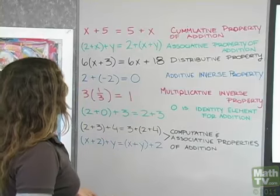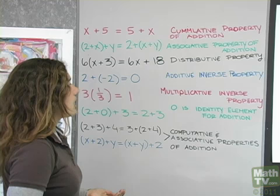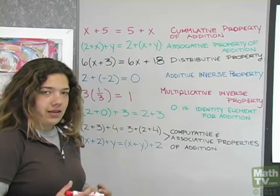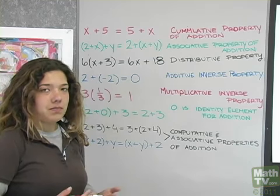So our first one is x plus 5 equals 5 plus x. That's the commutative property of addition. No matter what order you add anything in, it's going to turn out to be the same sum.